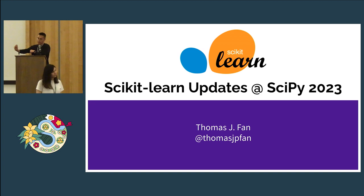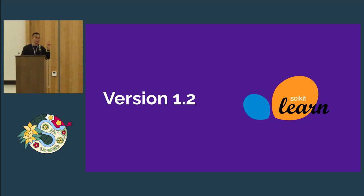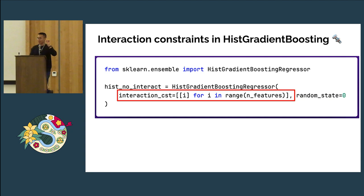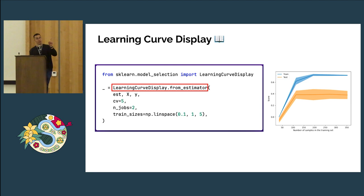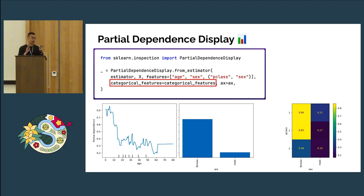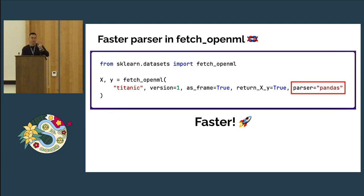Hi, I'm Thomas, a maintainer for Scikit-learn. I'm going to give an update on Scikit-learn for SciPy 2023. Since SciPy 2022, there's been two releases: 1.2 and 1.3. Histogram gradient boosting, Scikit-learn's version of LightGBM, now has interaction constraints. We have many different visualizations, including the prediction error display, which plots actual values with predicted values, and the learning curve display, which plots the metric while you change the size of your training data. There are also partial dependence displays, which now have categorical feature support.